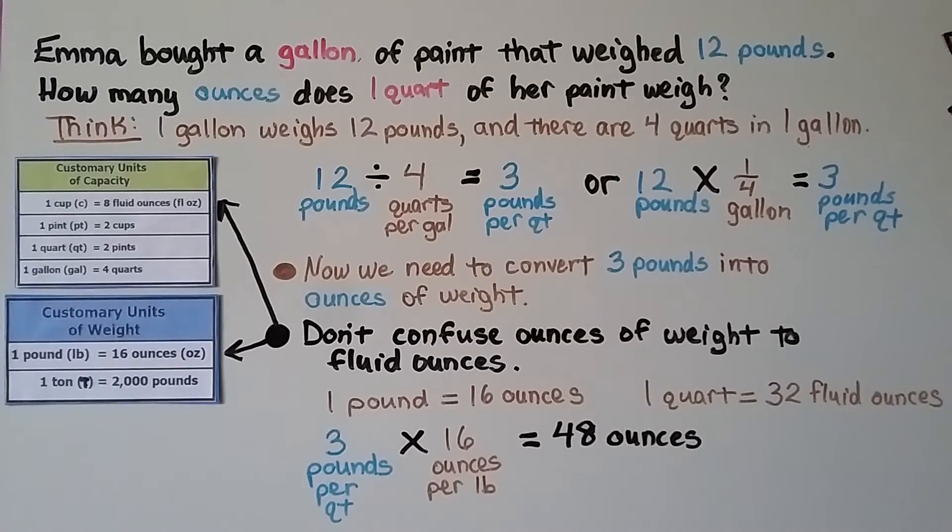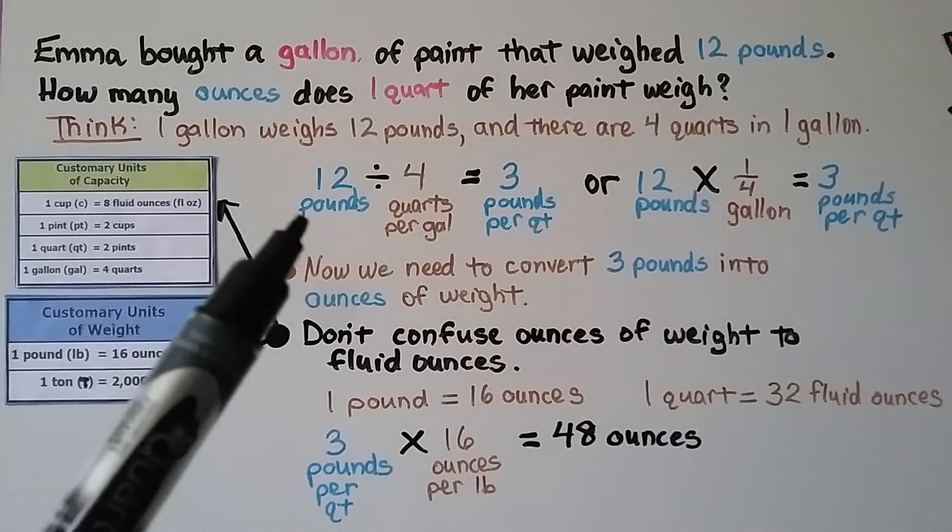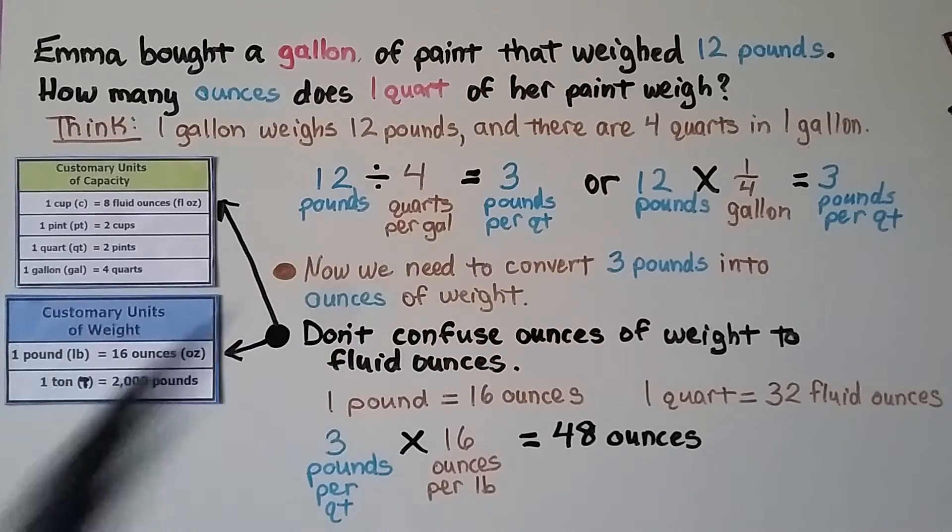Emma bought a gallon of paint that weighed twelve pounds. How many ounces does one quart of her paint weigh? We think one gallon weighs twelve pounds and there are four quarts in a gallon. We can do the twelve pounds divided by the four quarts per gallon. And that's three pounds per quart.